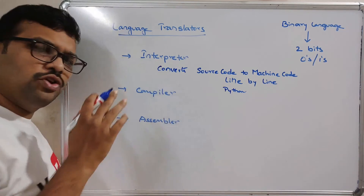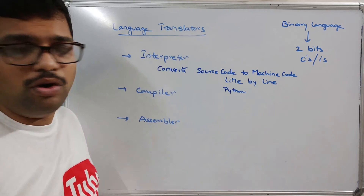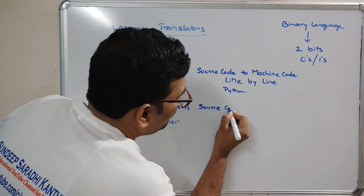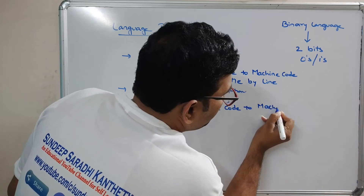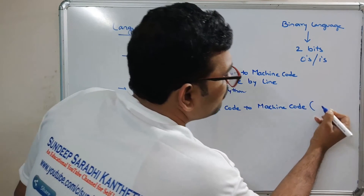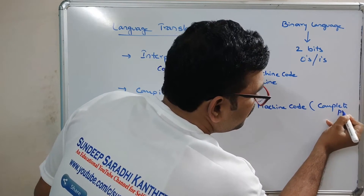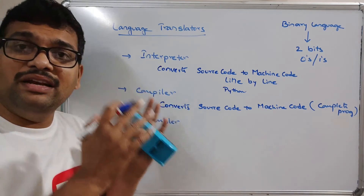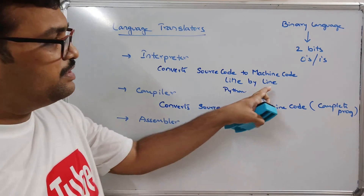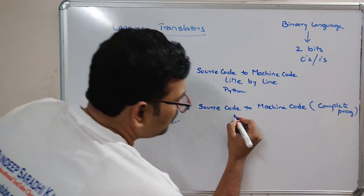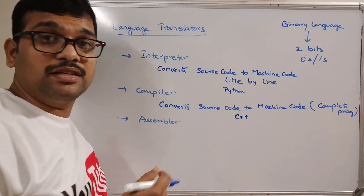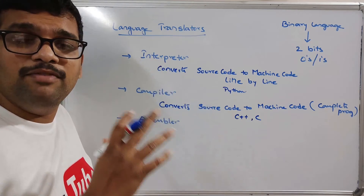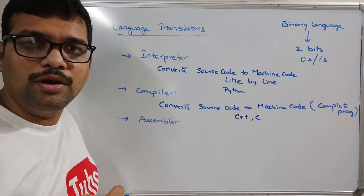The compiler is also used to translate high level language to low level language or machine code. It converts source code to machine code using a complete program — all the instructions are given at a time to the compiler so that it converts the entire program into machine code. The example for compiler is C or C++. The entire program is given as input and we get the object code as output.